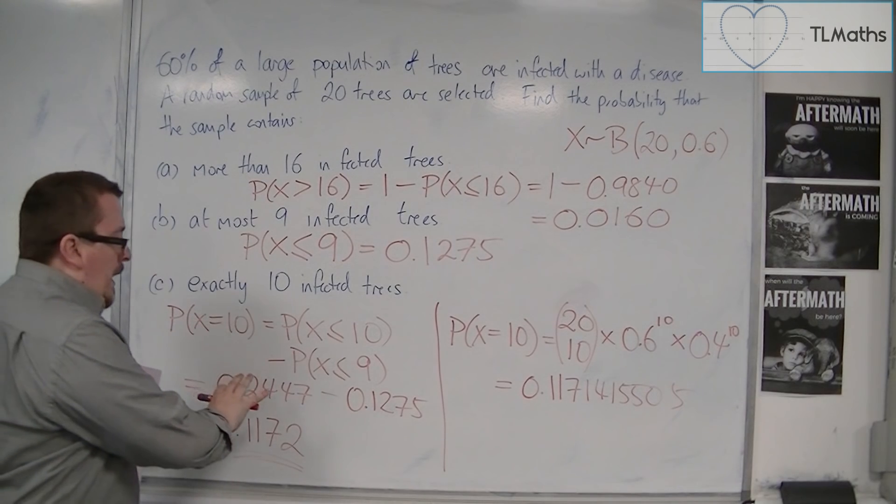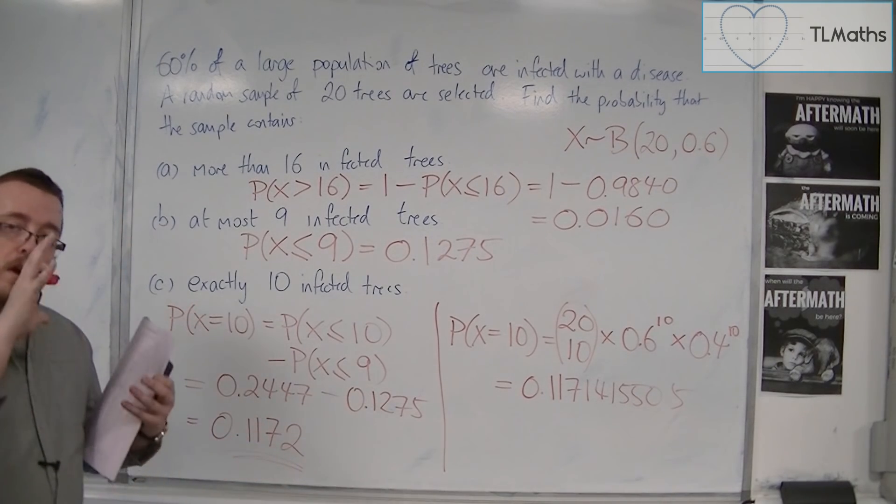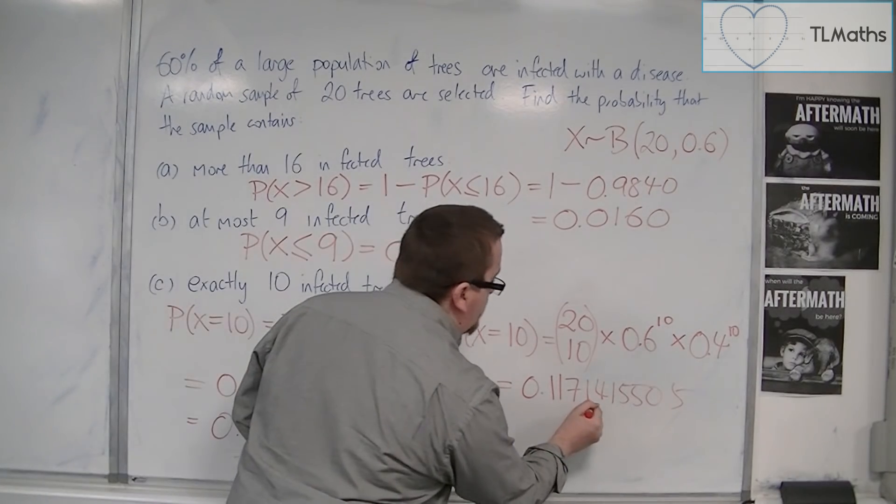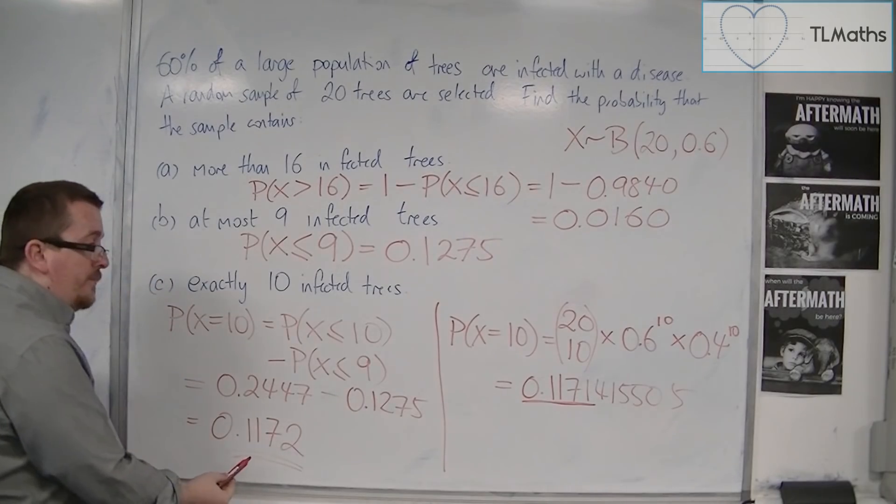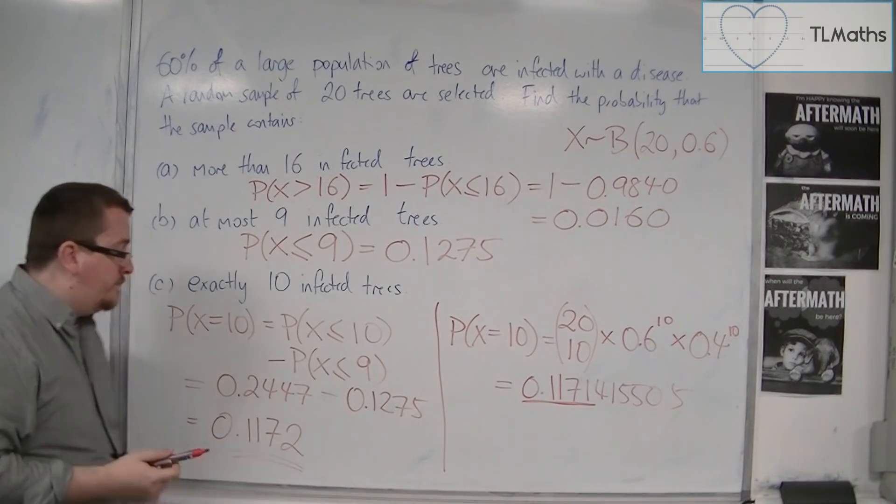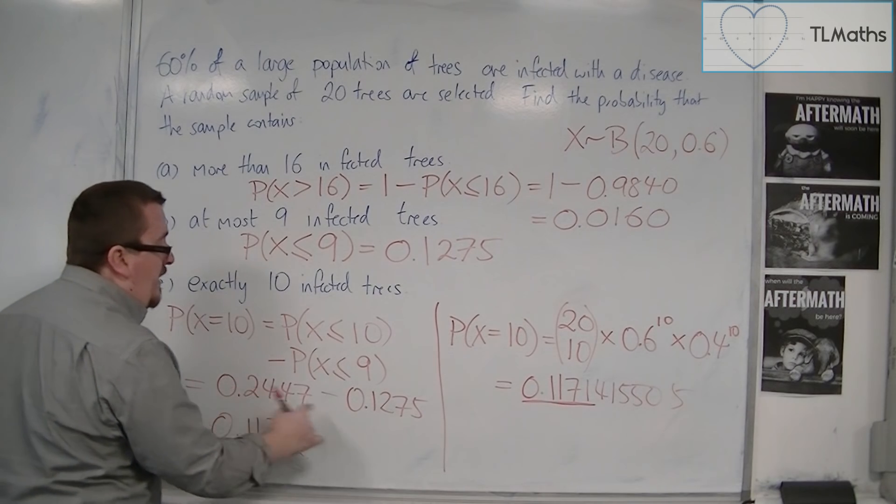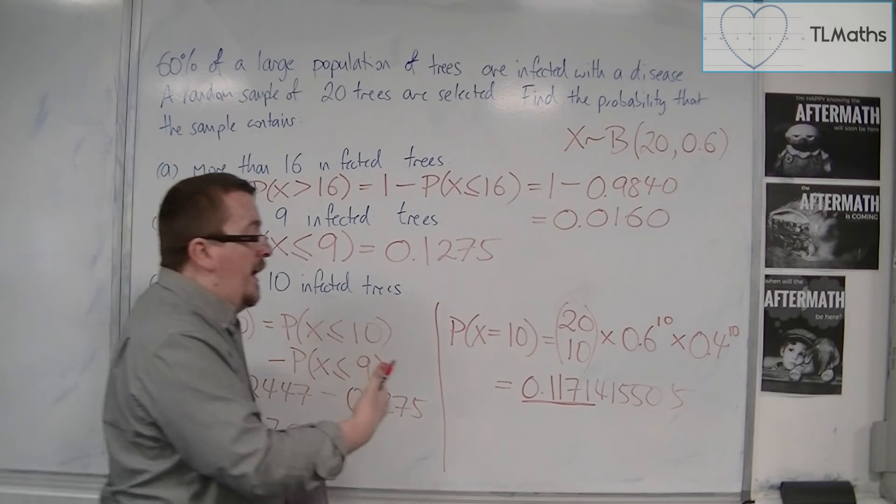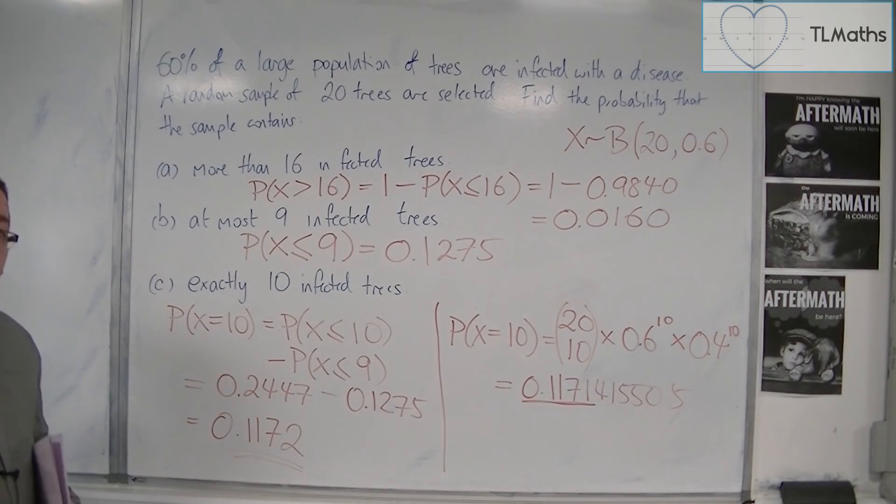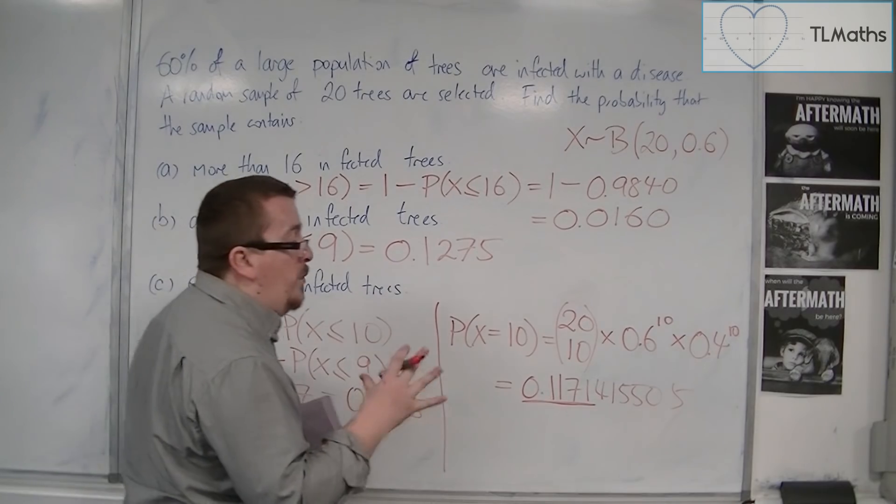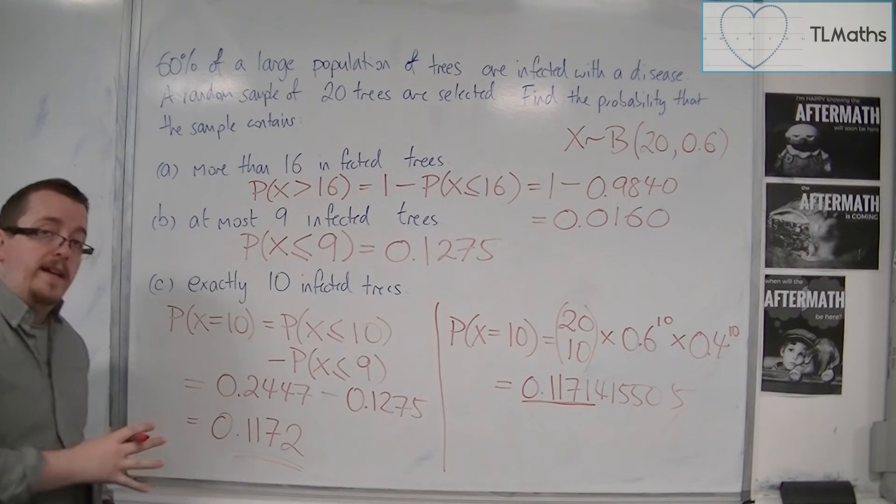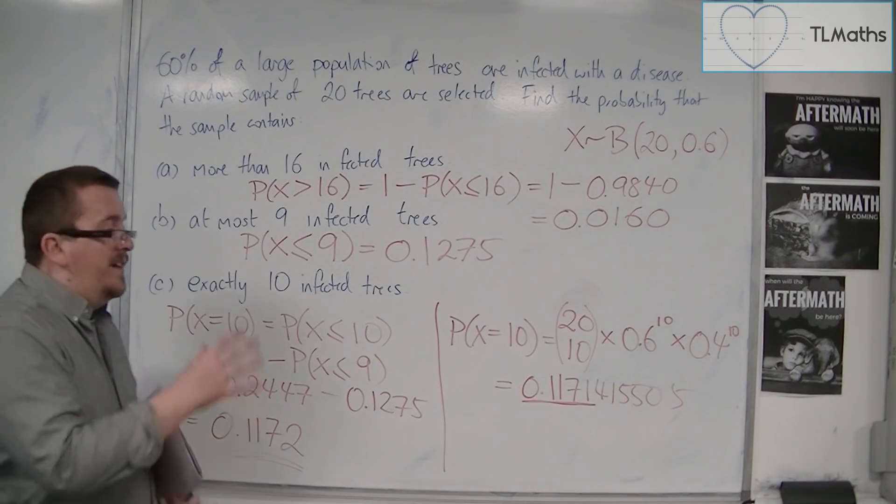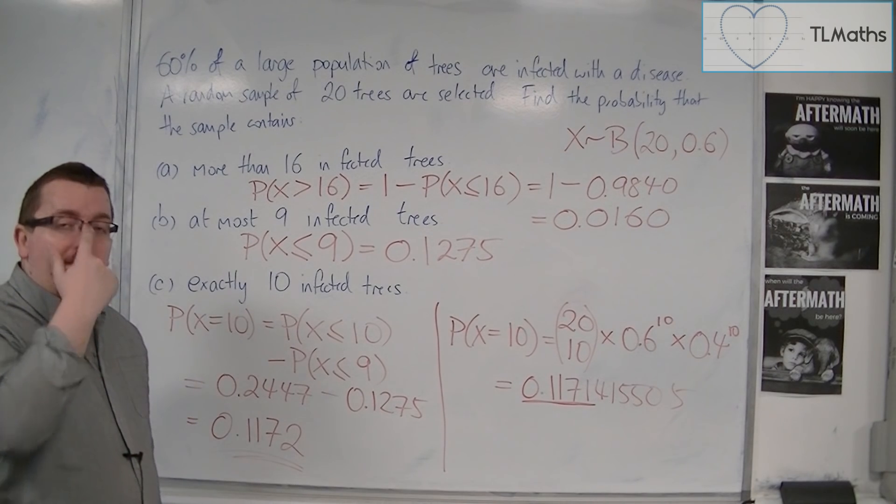But either are fine as your answer here. I know that to four decimal places, this doesn't round to that. It actually rounds to 0.1171. That's because of these both being rounded in the tables. And that's why there's this slight difference between the two. But it doesn't matter which one you write down, as long as you've shown your working in order to get there, so that the examiner could identify exactly how you got to your answer.